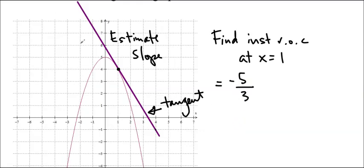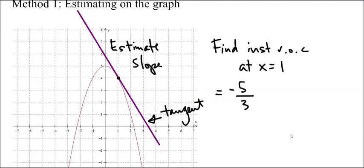Oh sorry, negative 5 over 3, because we actually have a negative slope going on here. So that's my estimated slope, the estimated instantaneous rate of change. And as you can see, this is actually a really inaccurate way to do it, because if I had drawn another line, and it was pretty close, I could get a completely different slope, but it could kind of look like it's a tangent. So we don't like this method.